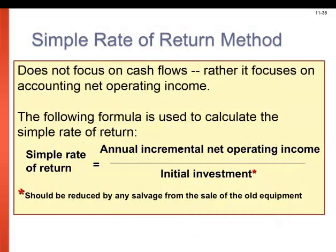The simple rate of return method is the last method we will explore — no present value tables on this one. This is a simple formula to calculate the rate of return based on the annual incremental net operating income divided by the initial investment. Be aware that we need to reduce the initial investment by any salvage value we're going to receive at the end of its life.